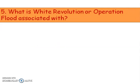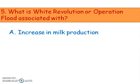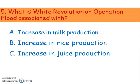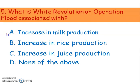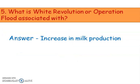Next question: what is the White Revolution or Operation Flood associated with? Options are increase in milk production, increase in rice production, and increase in juice production. The right answer is option A, increase in milk production. The White Revolution started in India in 1970, also known as Operation Flood, making India self-sufficient in milk production.